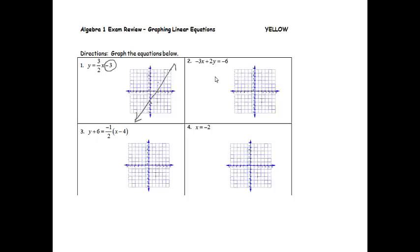Next one. Negative 3x plus 2y equals negative 6. The first thing that I need to do is get it to say y equals. So I'm going to add 3x to both sides. And I'll get 2y equals negative 6 plus 3x. And then I'll divide all three parts by the 2. So I'll get y equals negative 6 divided by 2 is negative 3 plus three halves x.